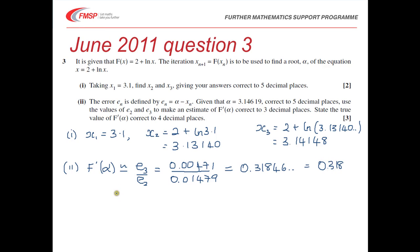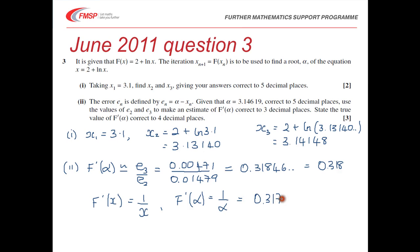Then it says to state the true value — 'state' means we should literally be able to write it down. We know that the derivative of log x is 1 over x, so F'(α) will be 1 over α. We're given α to be 3.14619, so if we do that division we get 0.31784, and we're asked to give it to four decimal places so that will be 0.3178. It's important that you give things to the right degree of accuracy. There was a method mark for knowing we had to work out E3 over E2, an accuracy mark for the answer, and one mark for stating the true value of F'(α).